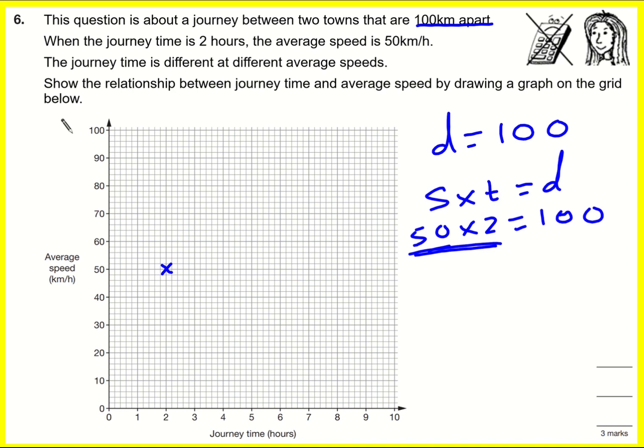But now we need to think about what if the average speed was something else? So maybe I double the average speed. Maybe I'm going 100 kilometers an hour the whole way. What do I need to multiply to give 100? It's just going to be 1. So this is another point on my graph. And then what if I halve the speed to 25? Then it would take twice as long, and it would give me a point here.